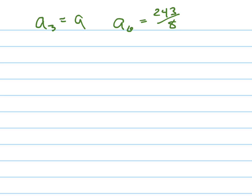So here's what we know about this. If it's geometric, this is the third one, then I'm going to have a fourth one, a fifth one, and the sixth one. So here's my sixth one, 243 over 8, and here's my third one, 9.